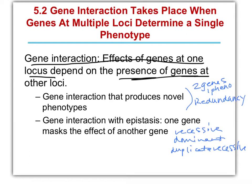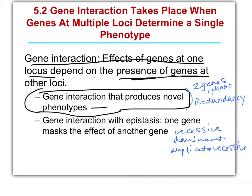We have essentially two different categories. We have the categories where a gene interaction produces some new phenotype — a novel phenotype — so two genes, one phenotype, or redundancy. And then we also have gene interactions that result in epistasis, where one gene can mask the effect of another. There are three different types of that: recessive epistasis, dominant epistasis, or duplicate recessive epistasis.